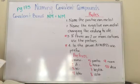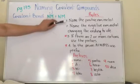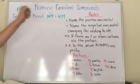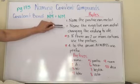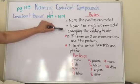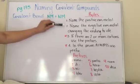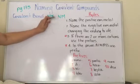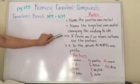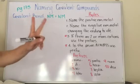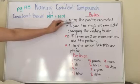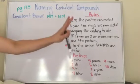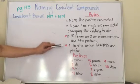So naming covalent compounds has different rules. First, we're going to name the positive non-metal, or the cation. Remember that when you have a positive charge, it's called the cation. Number two, we're going to name the negative non-metal, changing the ending to -ide. And the negative non-metal is called anion. Three and four are the different rules. If we have two or more cations, which is the positive non-metal, we use prefixes only if we have two or more. And in anion, we're always going to use the prefix.